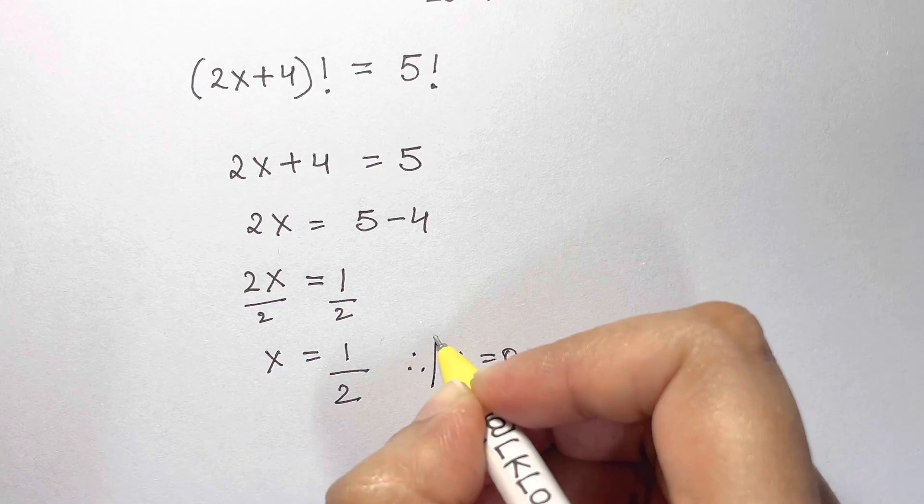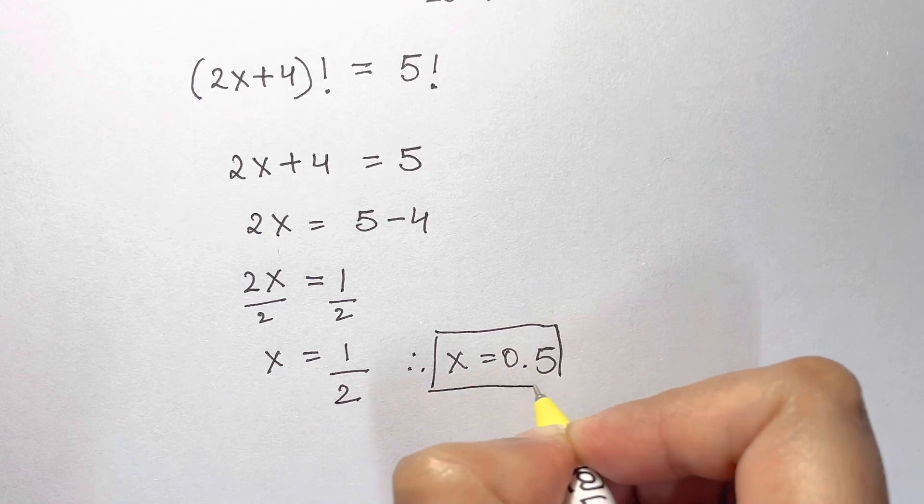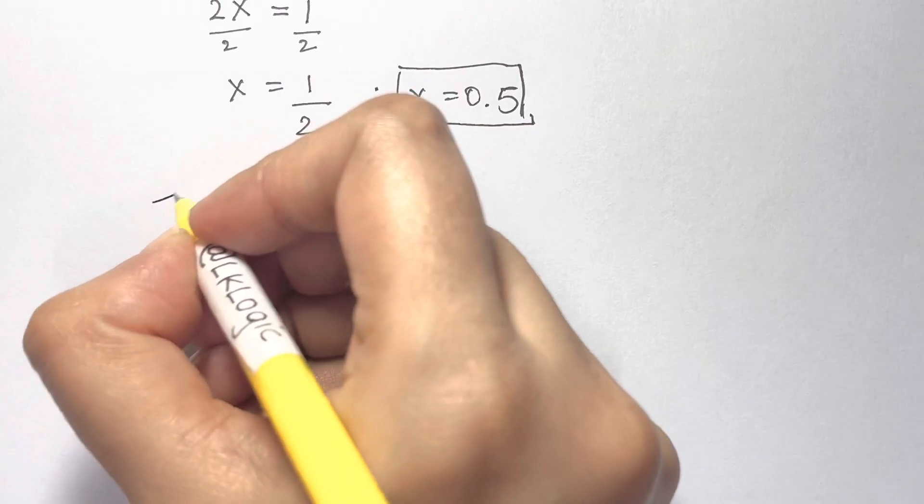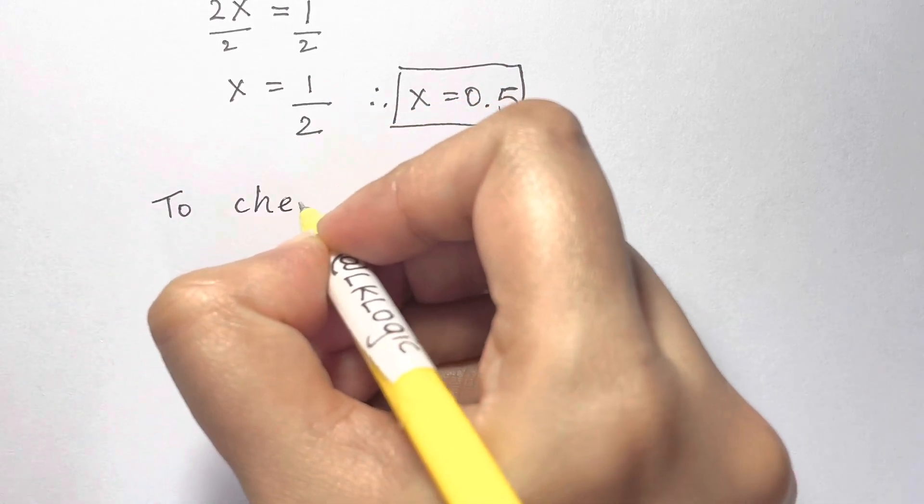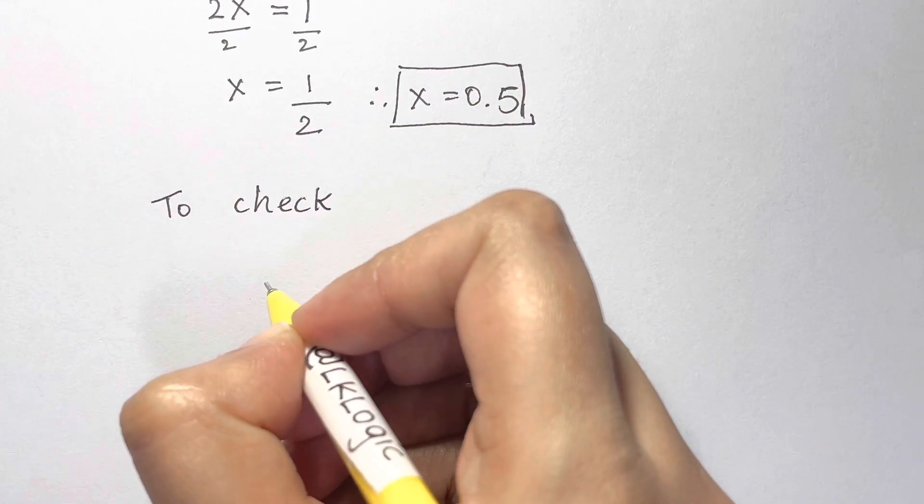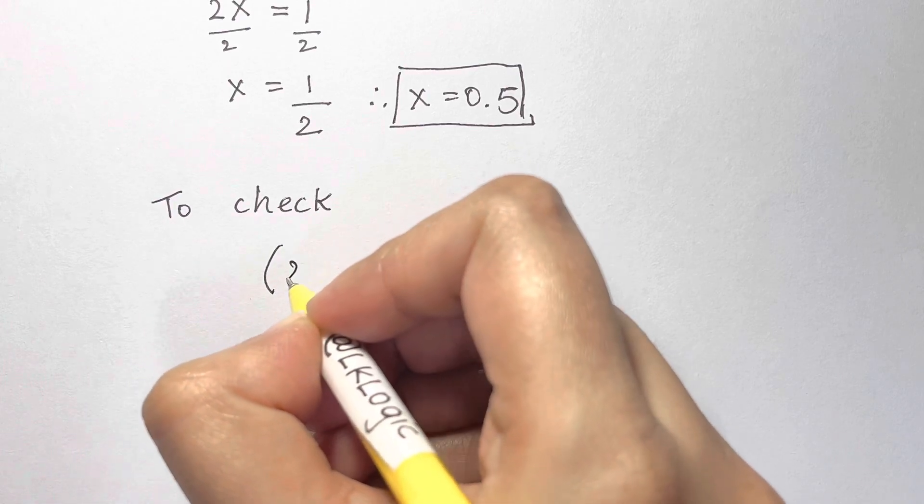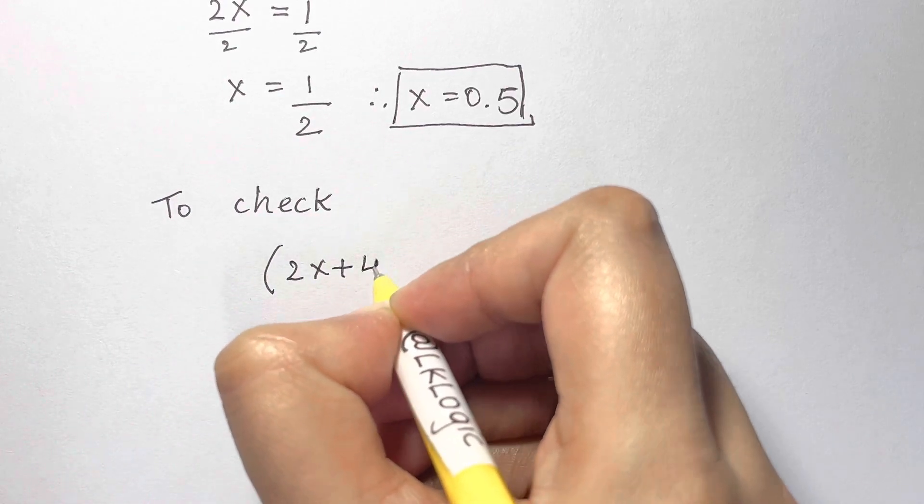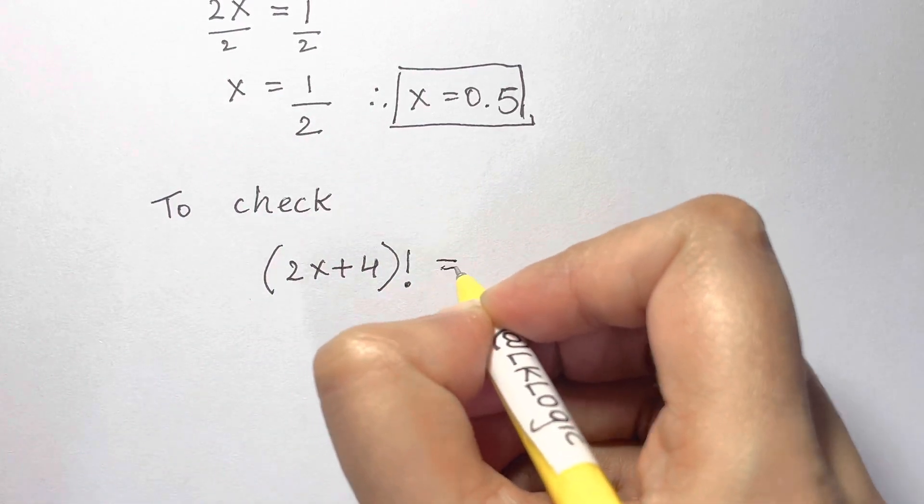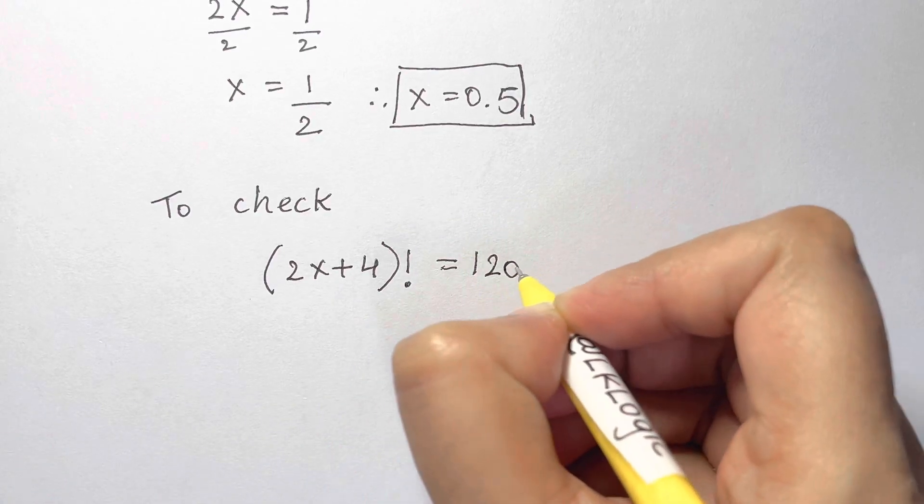Now if you want to check if our answer is right or not, to check, let's put it back in the equation: (2x + 4)! = 120. Let's put the value of x.